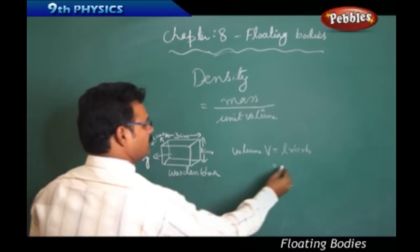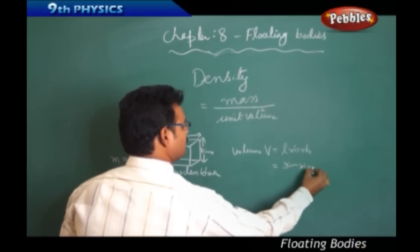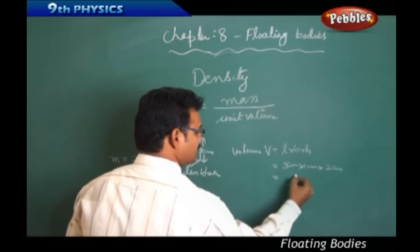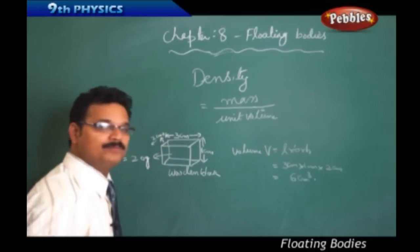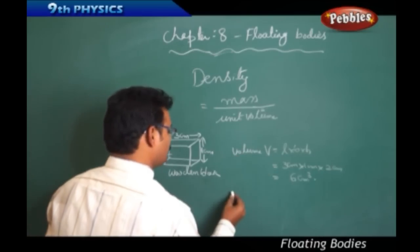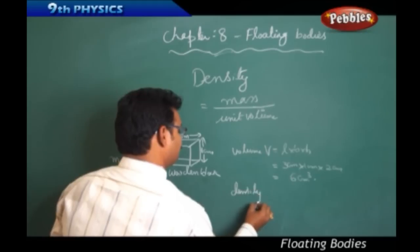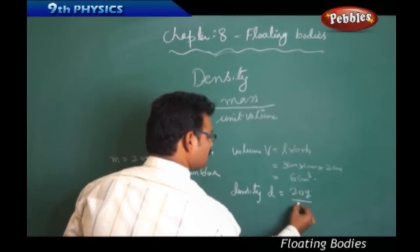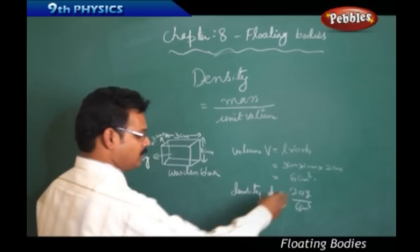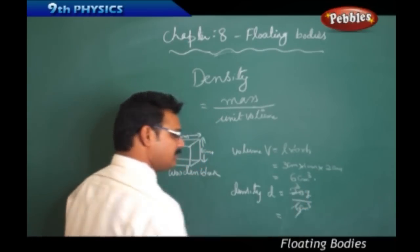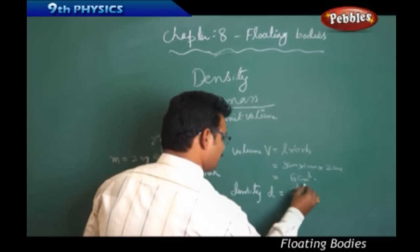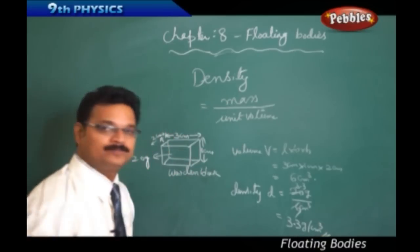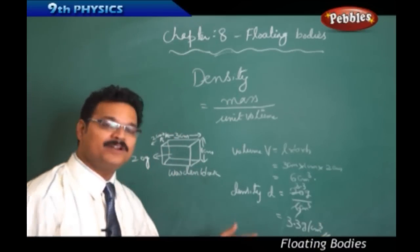So: length is 3 cm, breadth is 1 cm, height is 2 cm. Volume = 3 × 1 × 2 = 6 cubic centimeters. Mass is 20 grams and volume is 6 cm³. Therefore, density D equals mass divided by volume = 20 divided by 6, which is approximately 3.3 grams per cubic centimeter. The density of the wooden block is 3.3 g/cm³.